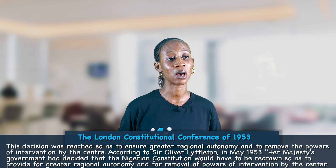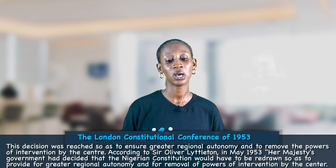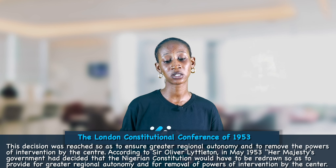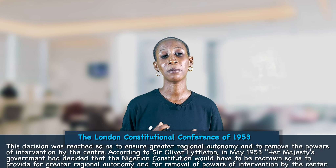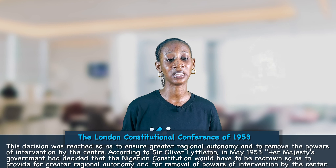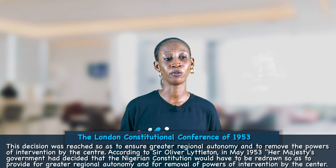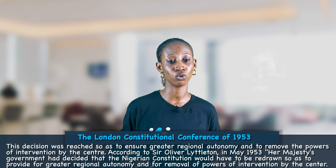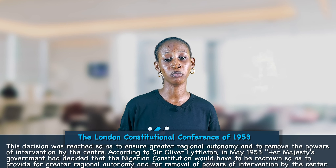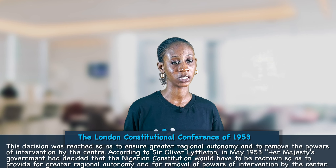According to Sir Oliver Lyttleton in May 1953, Her Majesty's Government had decided that the Nigerian constitution would have to be withdrawn so as to provide for greater regional autonomy and for the removal of powers of intervention by the federal or central government.